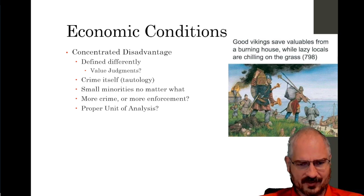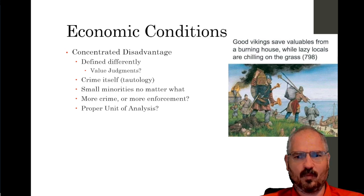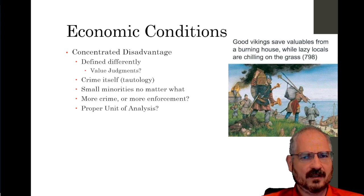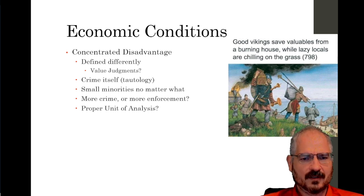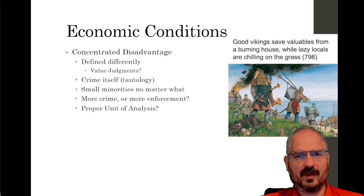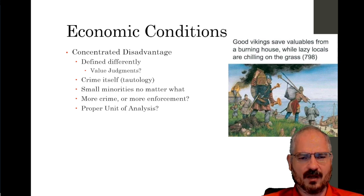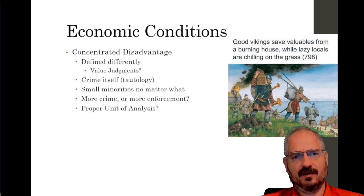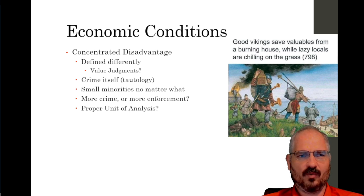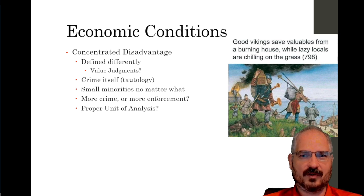No matter how much concentrated disadvantage we have, even in the worst neighborhoods, it's still a really small minority of juveniles involved in delinquency and a really small minority of adults committing crimes. If social disorganization is the cause of crime, why do even the worst neighborhoods have such a small percentage of people committing crimes? Shouldn't it be most people, or even everybody?